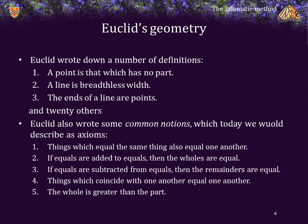Euclid also wrote some common notions, which we would describe today as axioms. He begins with: things which equal the same thing are also equal to each other — so if A equals B and B equals C, then A equals C. Next, he assumed: if equals are added to equals, then the wholes are equal — meaning if A equals B and C equals D, then A plus C equals B plus D.